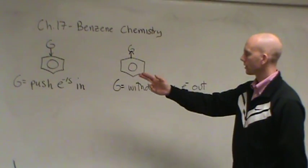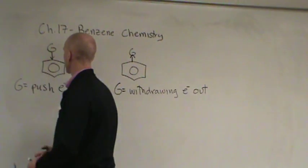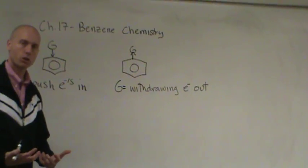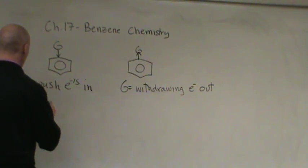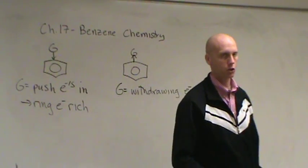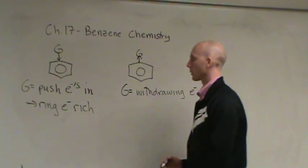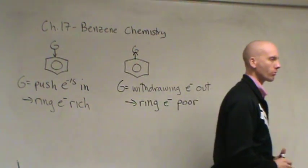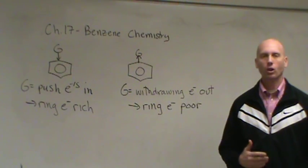In the first one, we have a push. In the second one, we have a pull. If the G is pushing electrons into the ring, it's making the ring electron rich — just like adding money to your bank account makes you more rich. Over here, this G is pulling electrons out, making the ring electron poor.